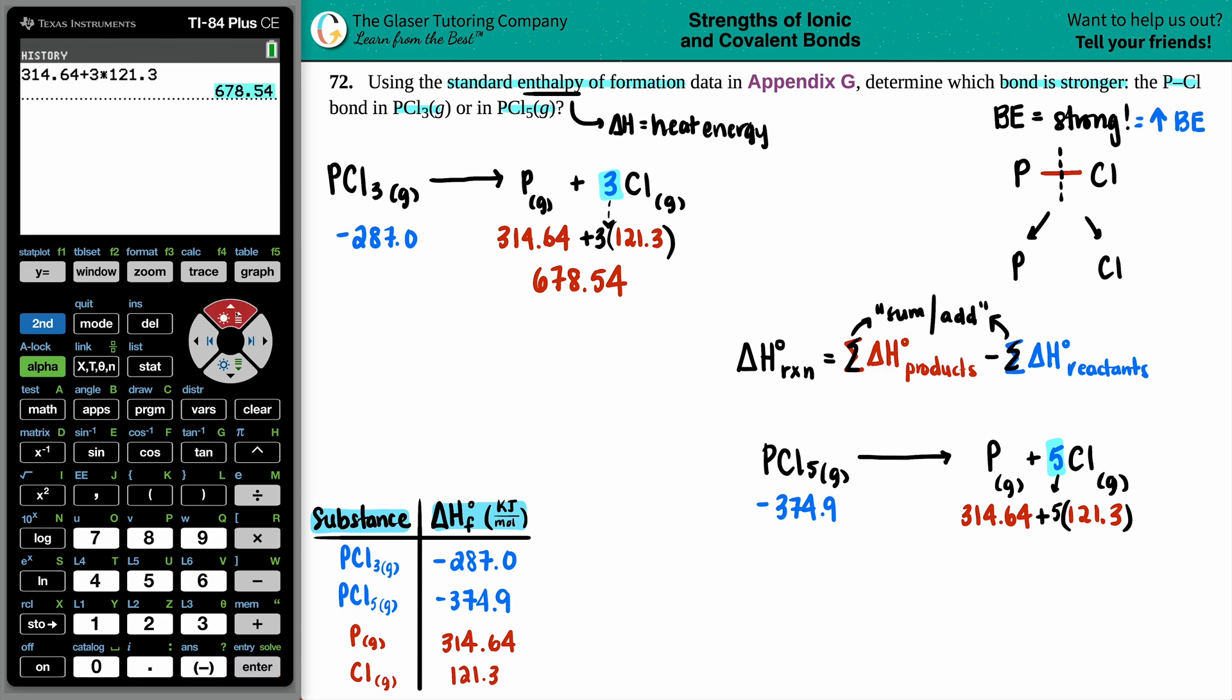Now let's sum up the product side. I love the TI-84 because I could just go right up here. All the numbers are the same except for that three. I'm just going to change it to a five and press enter. So now the new total is 921.14.